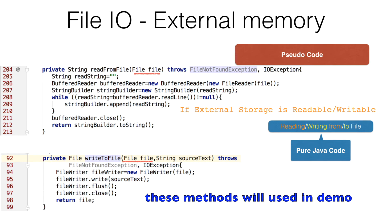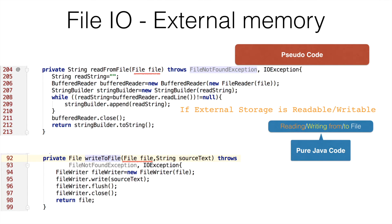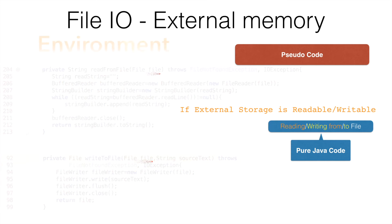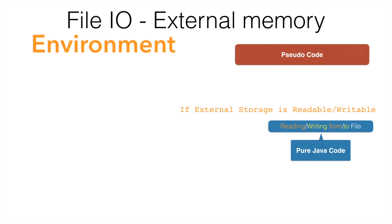The next important aspect is how to check whether you have an external storage, whether you can write to it, and whether you can read from it. That is where the Environment API of Android comes in very handy.